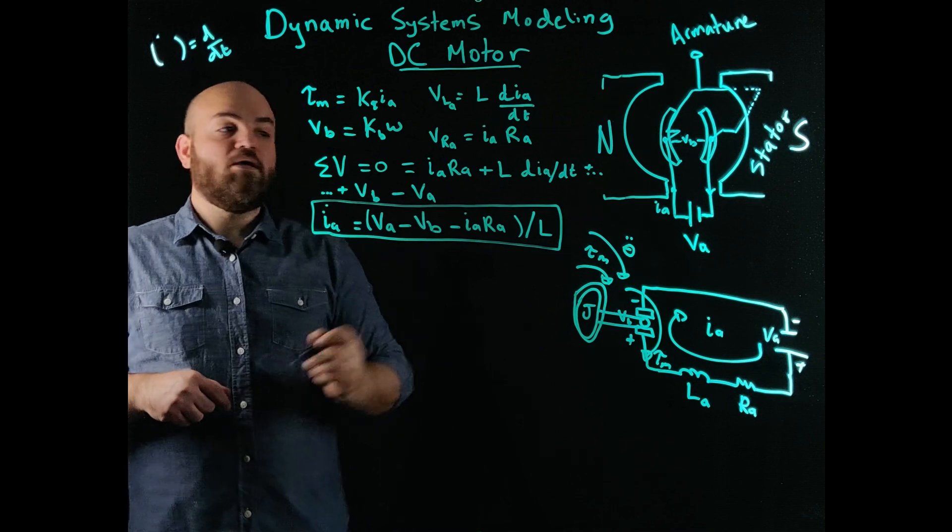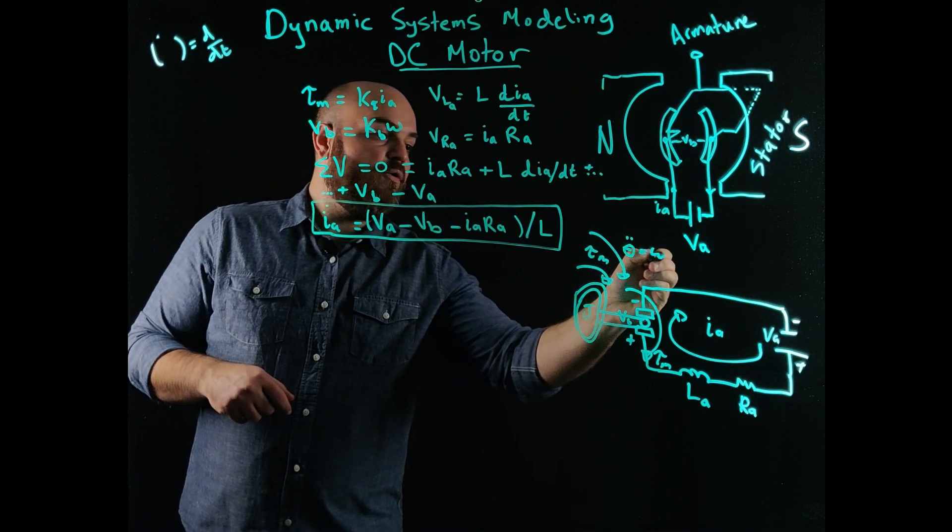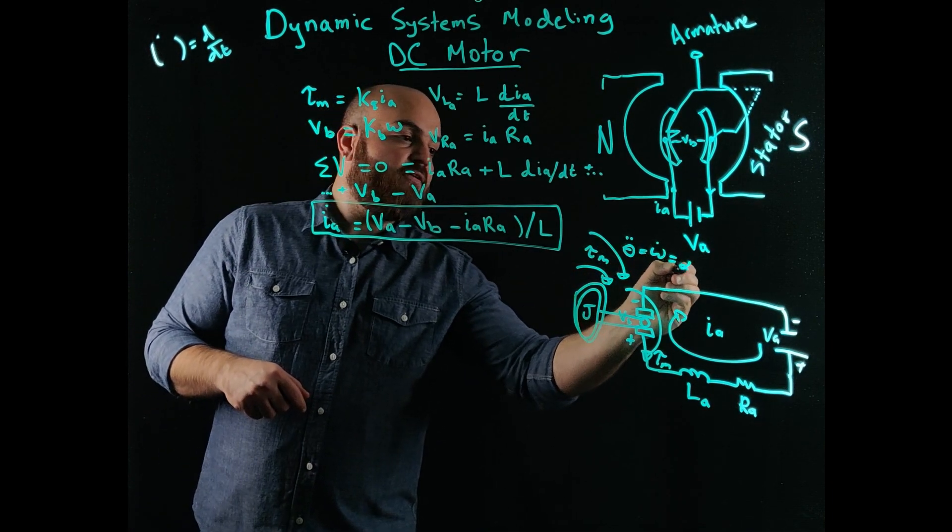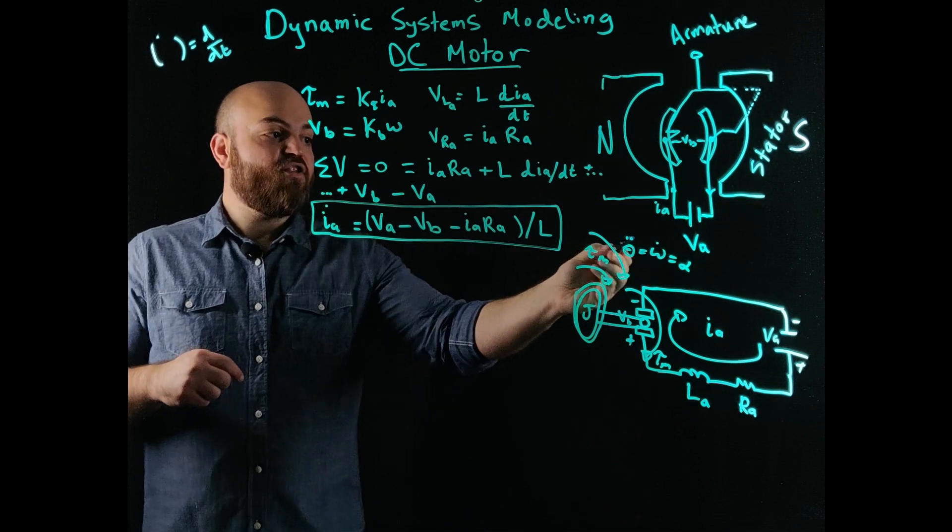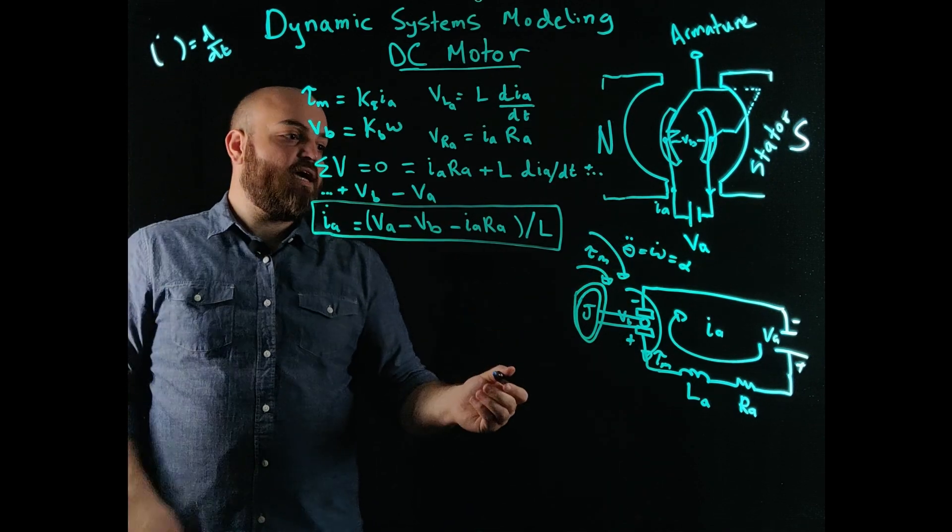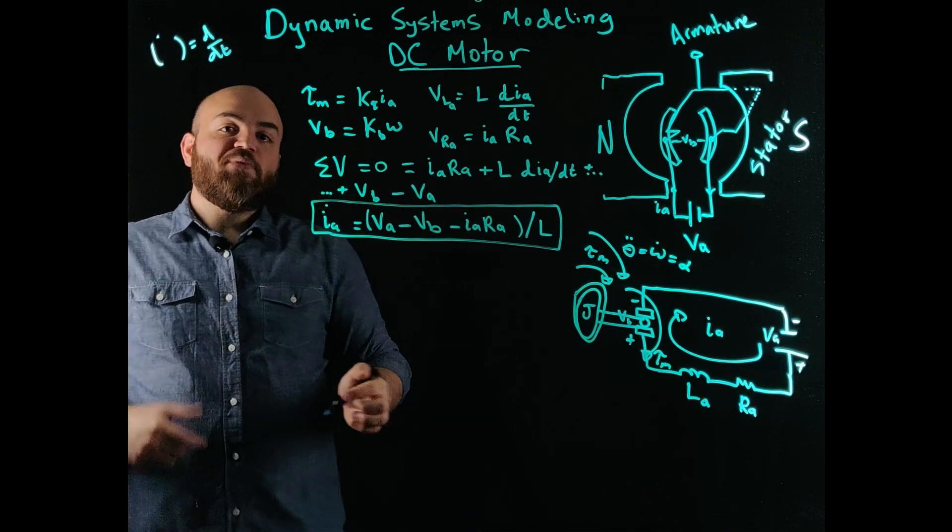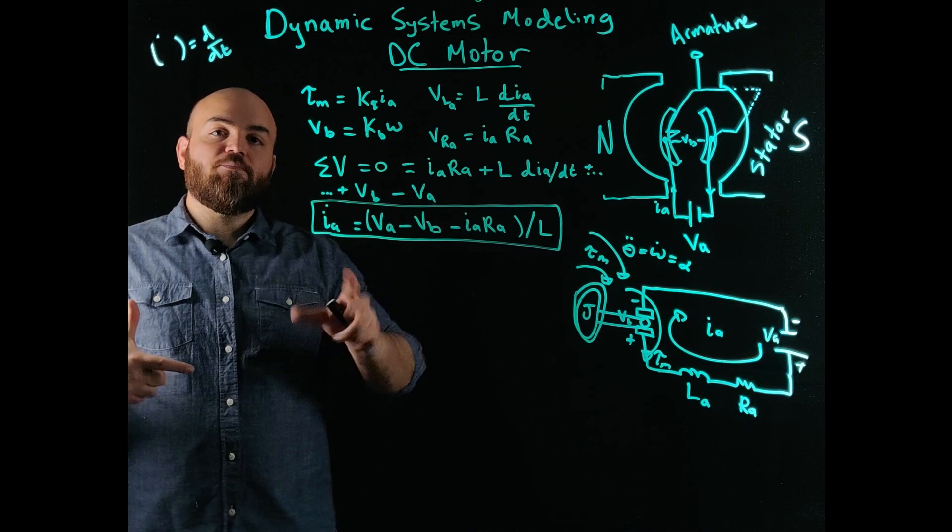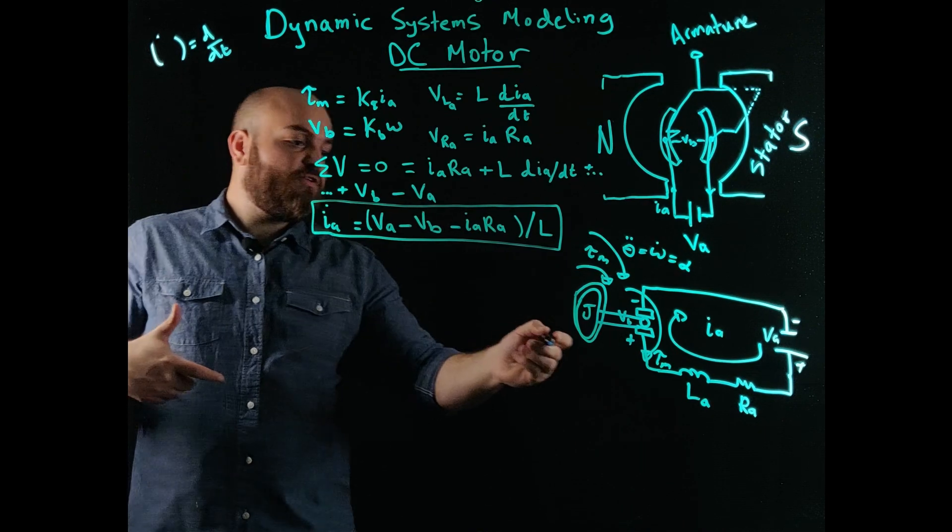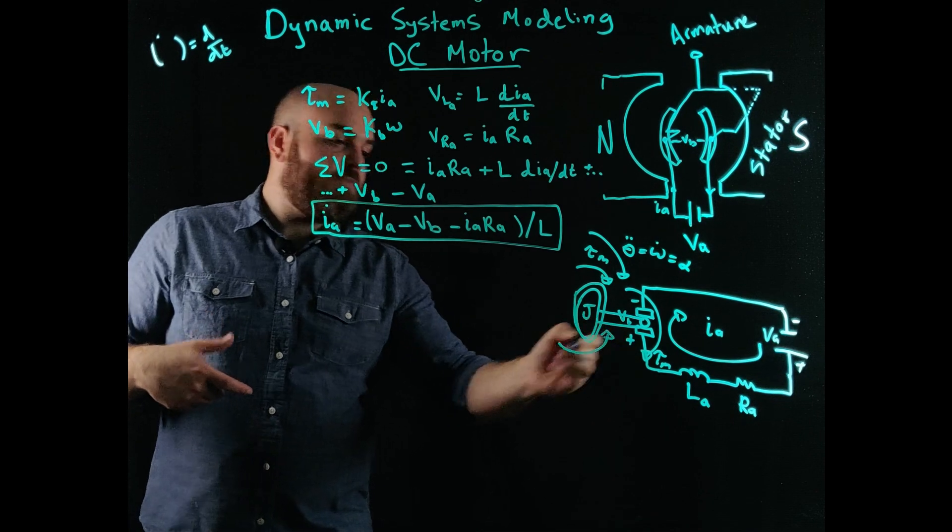Let's call it theta double dot, which is essentially omega dot, which is alpha. I'll talk about what those are. Again, dot is the derivative with respect to time. But also, I have friction. Because my shaft is rotating, there's a friction that's counteracting this motion.